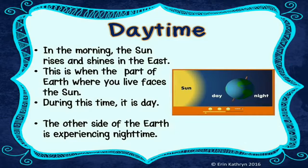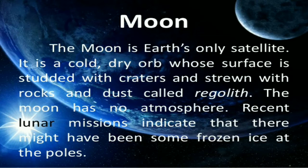Now we are going to learn the next slide: the Moon. The Moon is Earth's only satellite. Its surface is cold, dry, and stuffed with craters and saturated with rocks and dust — it's called regolith. The Moon has no atmosphere. Recent lunar missions indicate that there might have been some frozen ice at the poles.